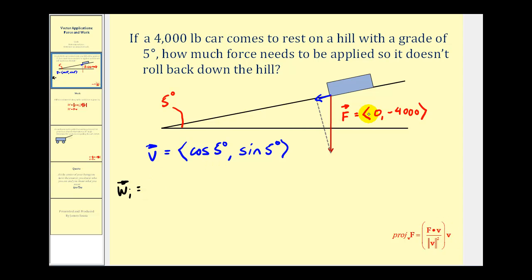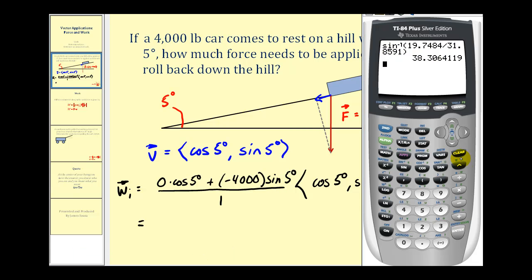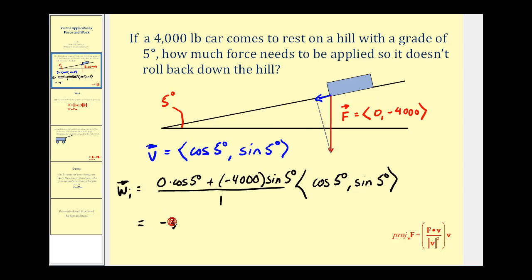So if we dot f and v, we're going to have zero times cosine five degrees plus negative 4,000 times sine five degrees divided by the magnitude of vector v squared. Vector v is a unit vector and therefore the magnitude is equal to one, one squared is still one. And we now need to multiply this by vector v, which is cosine five degrees, sine five degrees. So this would be zero and negative 4,000 times sine five degrees is going to give us approximately negative 348.6 times our unit vector.